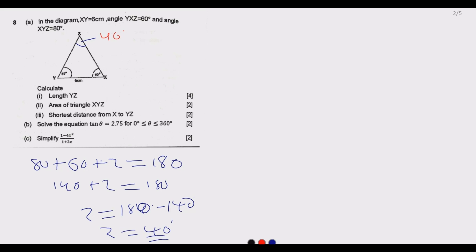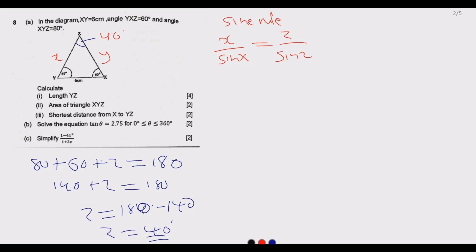Now we know all three angles and one side. When you know at least one side and the other angles, the simplest formula to use is the sine rule. The sine rule states that the ratio of a side to its corresponding angle is the same throughout any given triangle: side X over sine angle X equals side Z over sine angle Z equals side Y over sine angle Y.